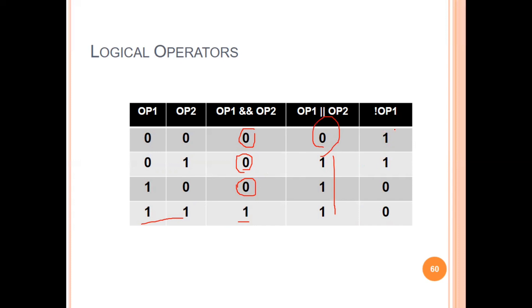The logical NOT operator reverses the result. If the operand is false, the result is true; if the operand is true, the result is false. This is the logical NOT operation — it is the negation/opposite of the input value.